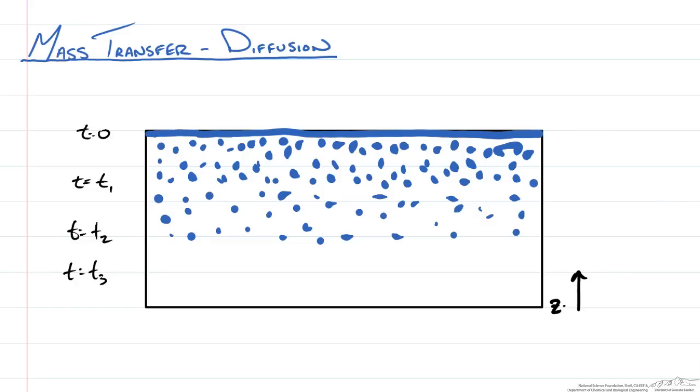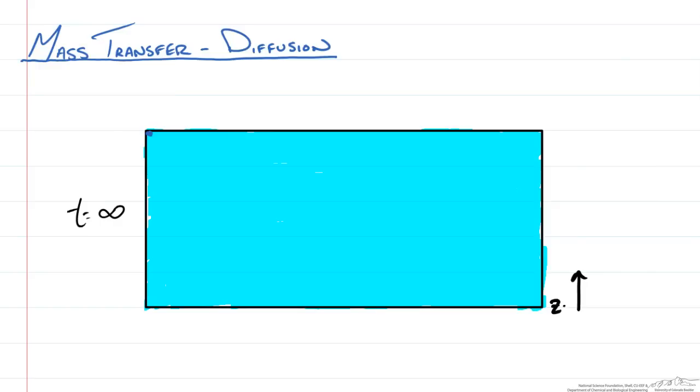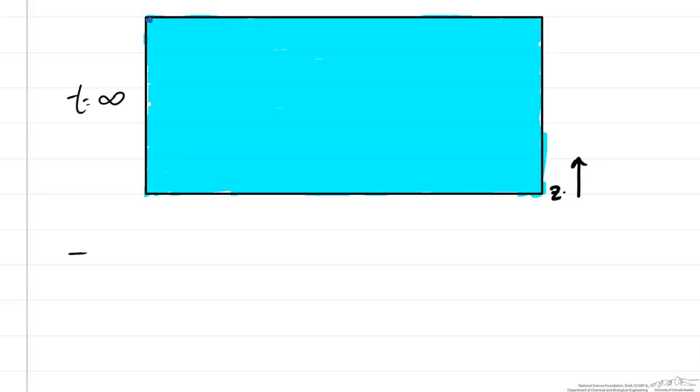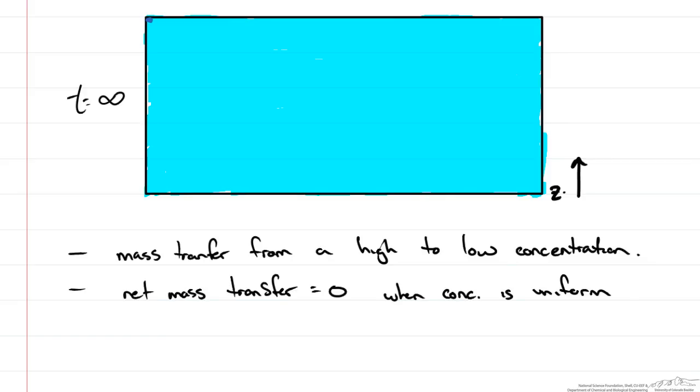At a time t3 we notice that more of this fluid has moved closer to the bottom. Eventually if we leave this here long enough, more and more of this fluid at the top will start moving down. We will notice that we don't really notice anything moving anymore and we have reached some kind of equilibrium state. From this we saw that we have some kind of mass transfer from a high concentration to low concentration.